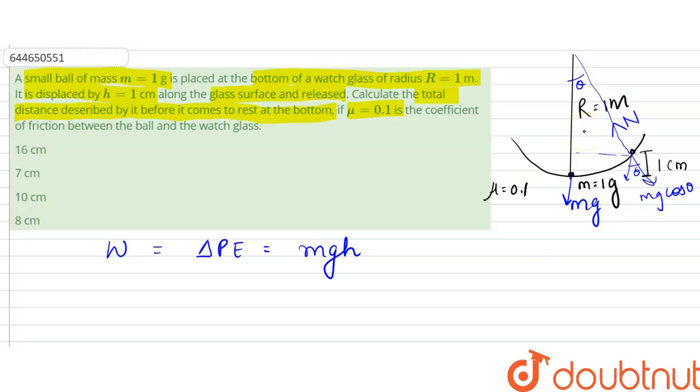And we would have along this tangential one, so that would be mg sin theta.